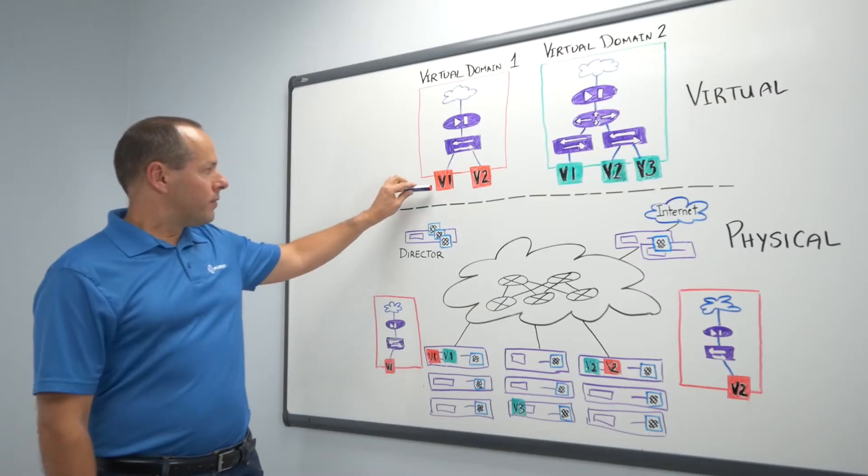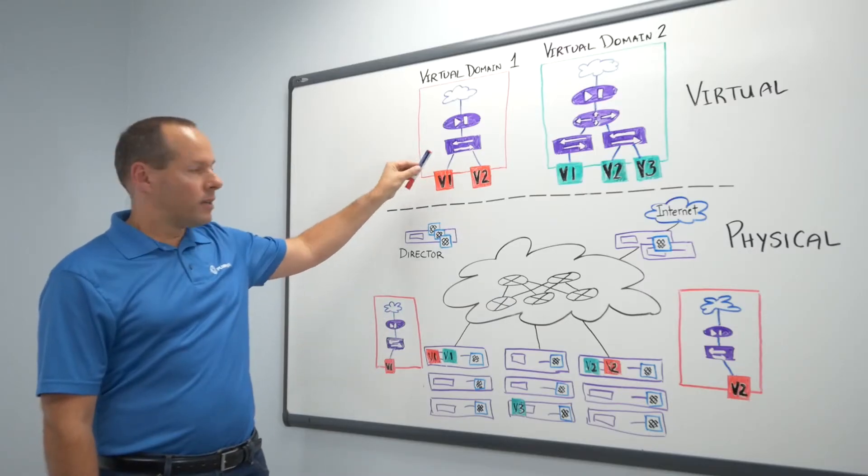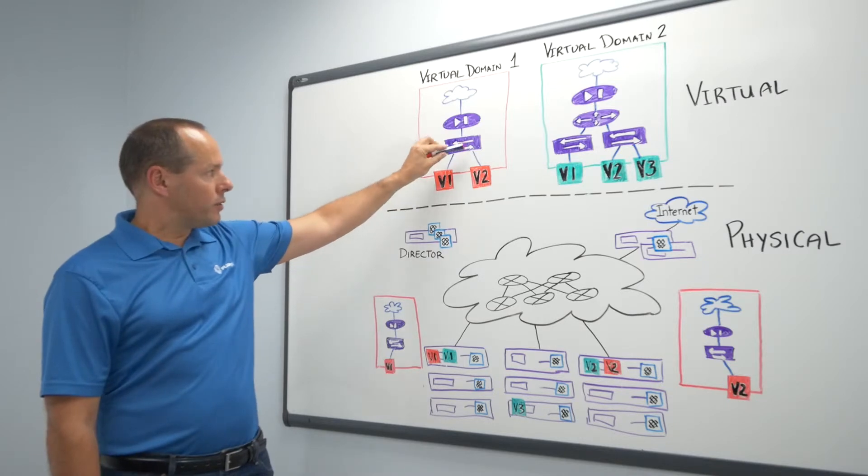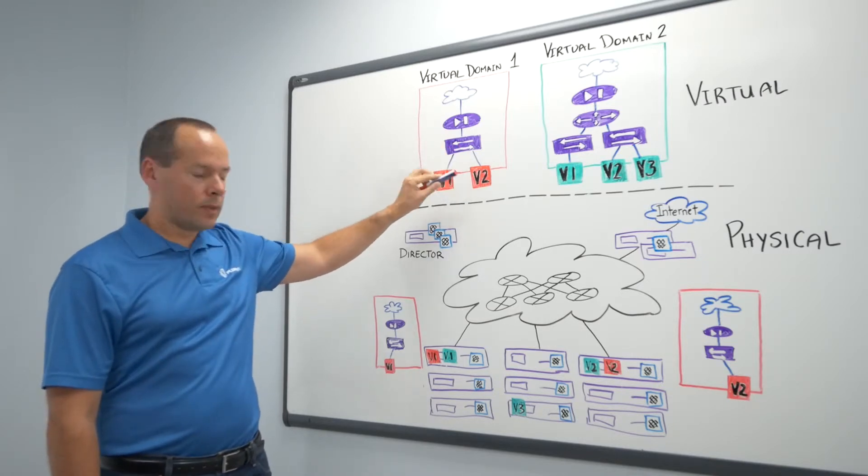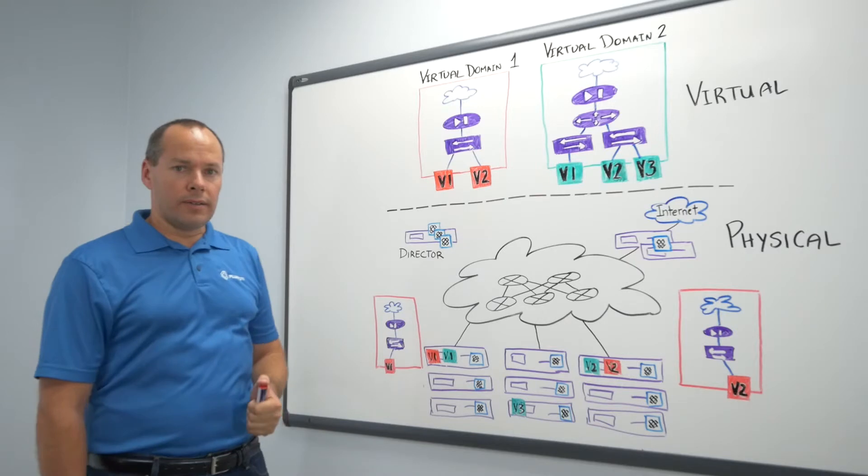Again, we have virtual machine 1 and 2 on the same bridge, where virtual machine 1 would like to communicate to virtual machine 2. How is that done in a virtual network function?